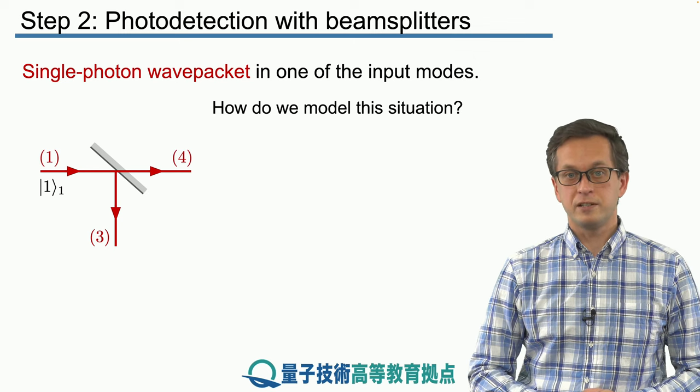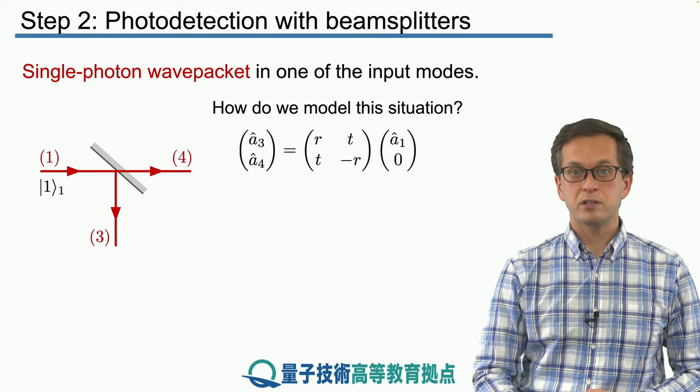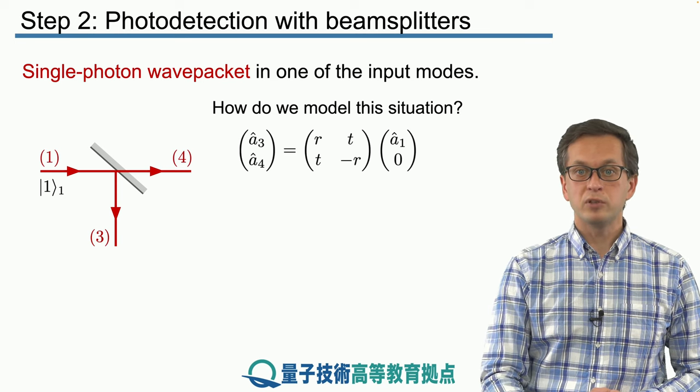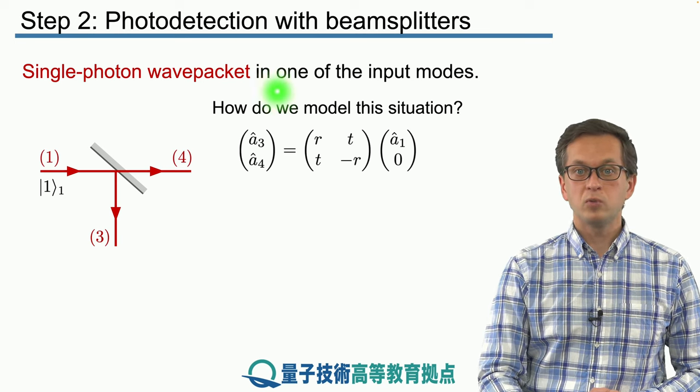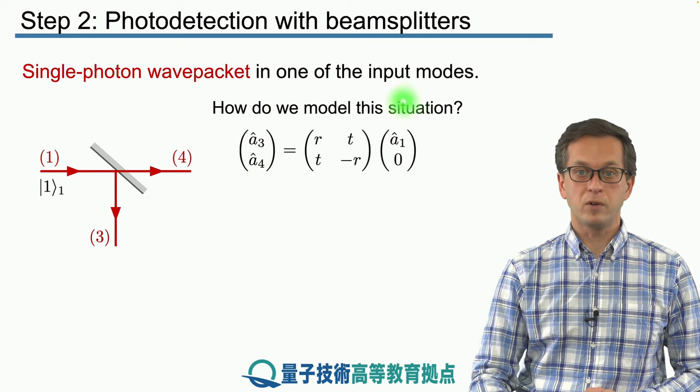So how do we model this situation? We know how our beam splitter matrix S transforms our input modes A1 into modes A3 and A4. So let's consider the following model of our situation.